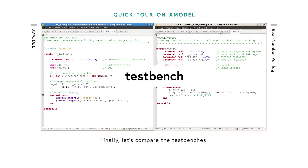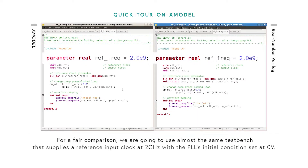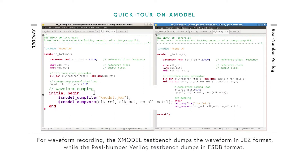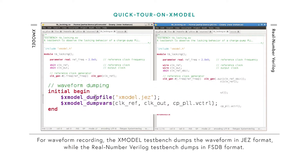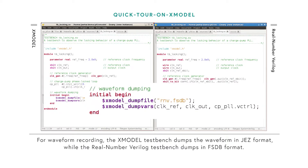Finally, let's compare the test benches. For a fair comparison, we're going to use almost the same test bench that supplies a reference input clock at 2 GHz and setting the PLL initial condition at 0V, which corresponds to 1.5 GHz oscillator frequency. For waveform recording, the X-Model test bench dumps the waveform in a JEZ format, optimized for this event-driven simulation, while the Real Number Verilog test bench dumps in a FSTV format, optimized for dumping a large number of real events.